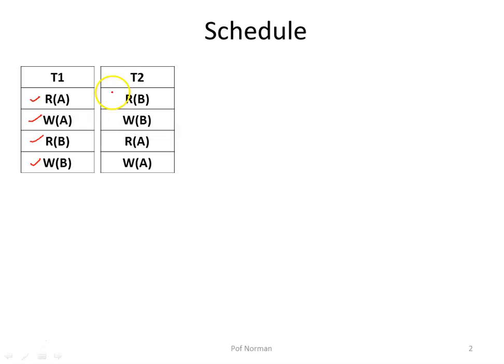In transaction T2, it reads the database item B first, then writes to it. After that it reads database item A and then writes to database item A. There is no connection between transaction T1 and T2. To make the best use of the system resources, I have to execute these transactions concurrently so that all the resources are effectively utilized.